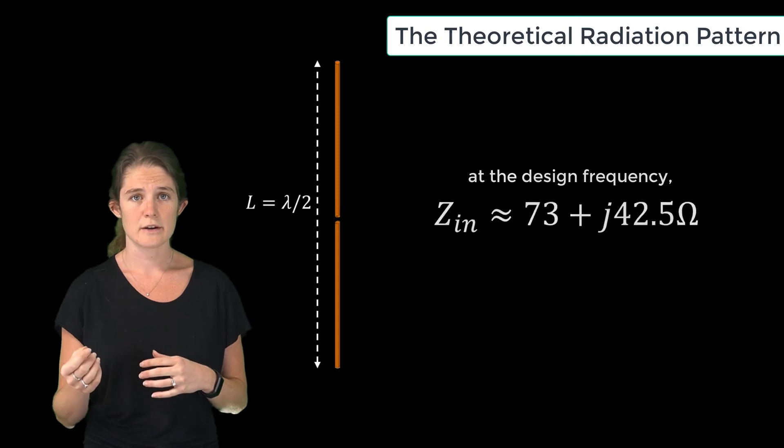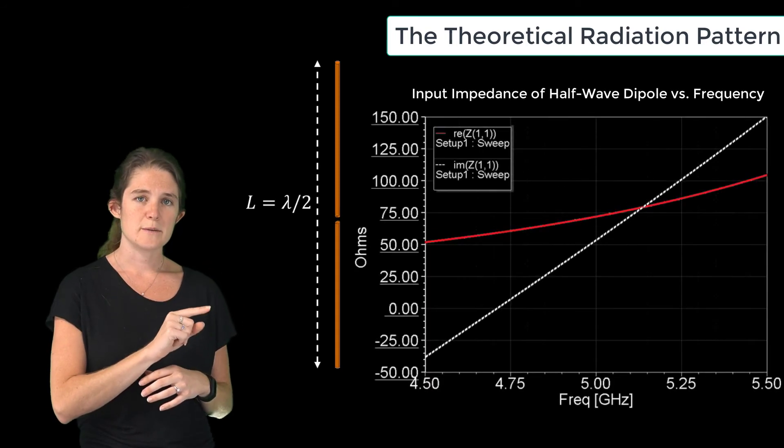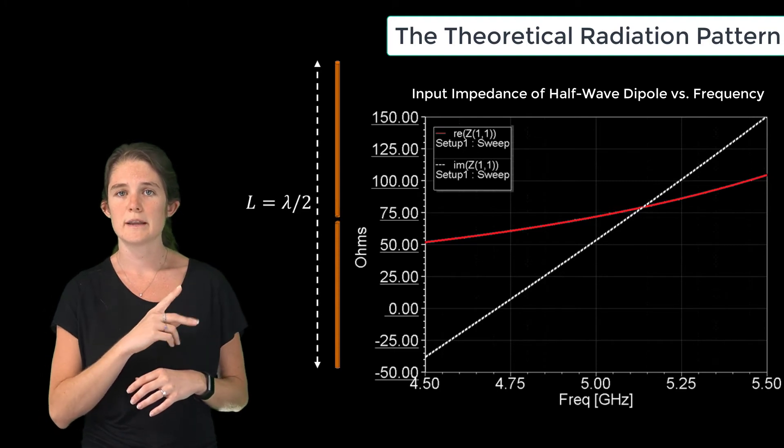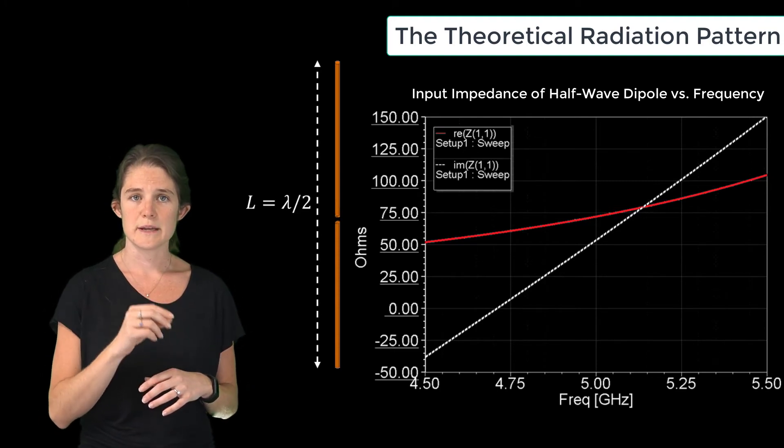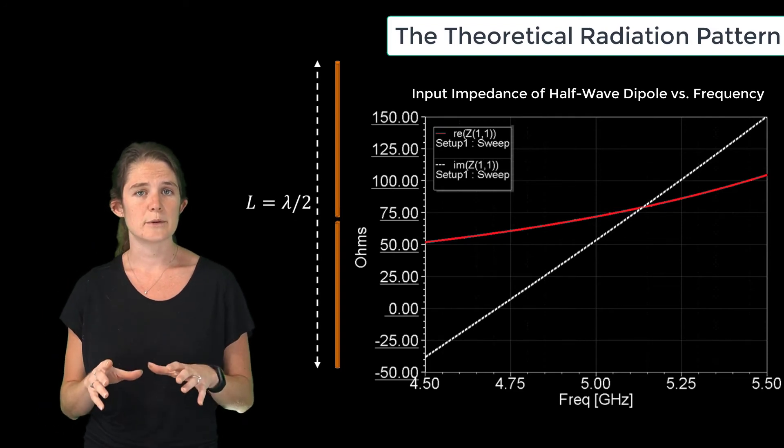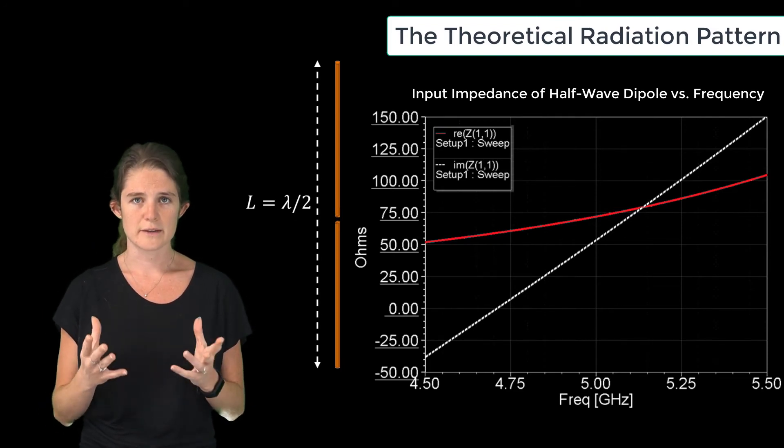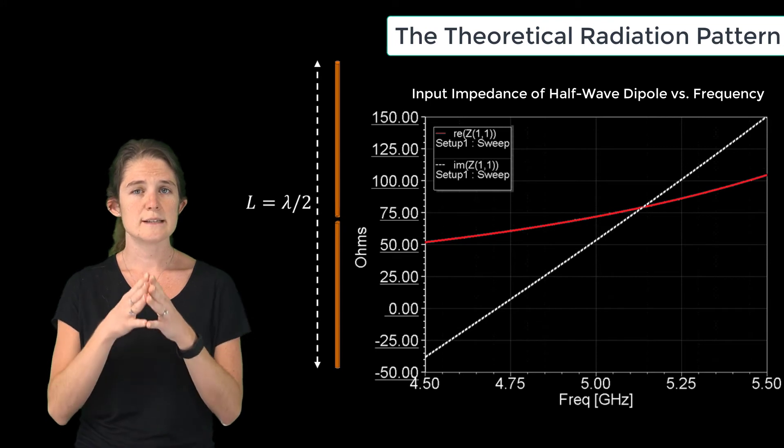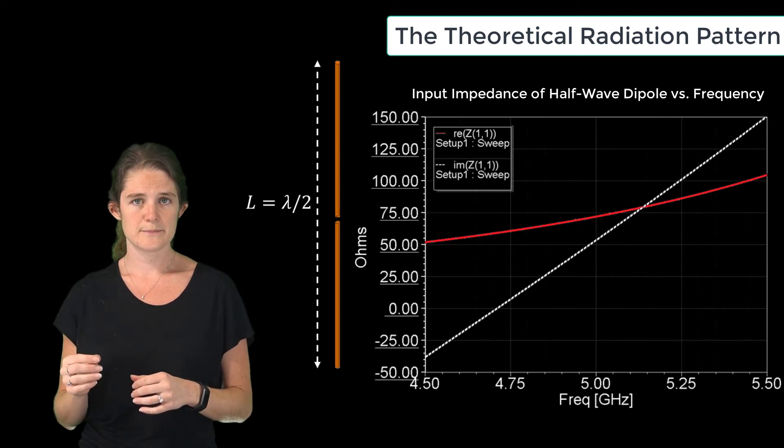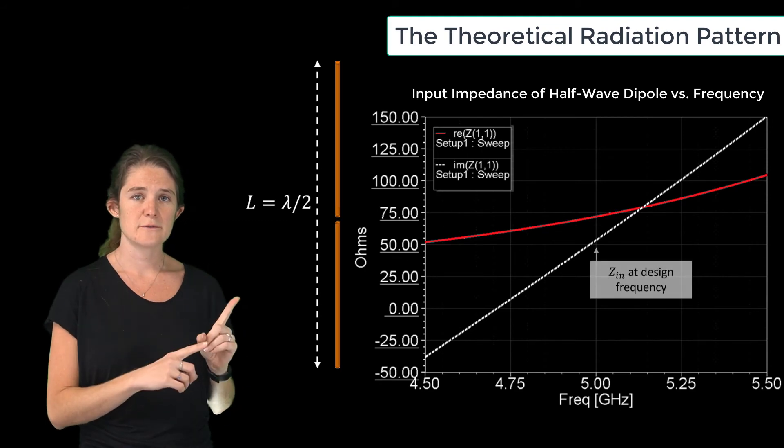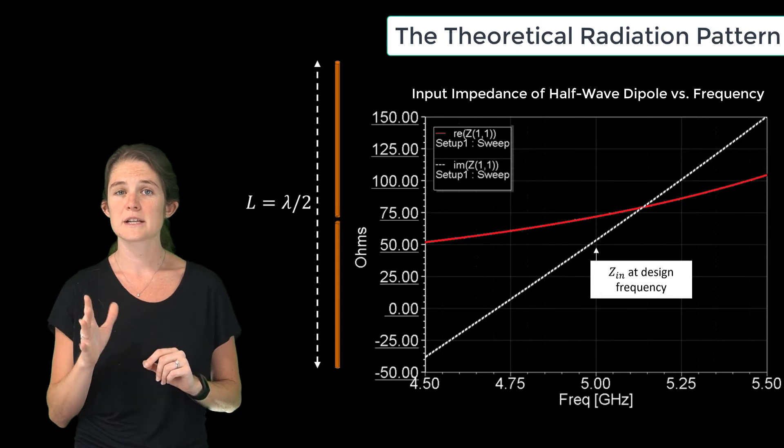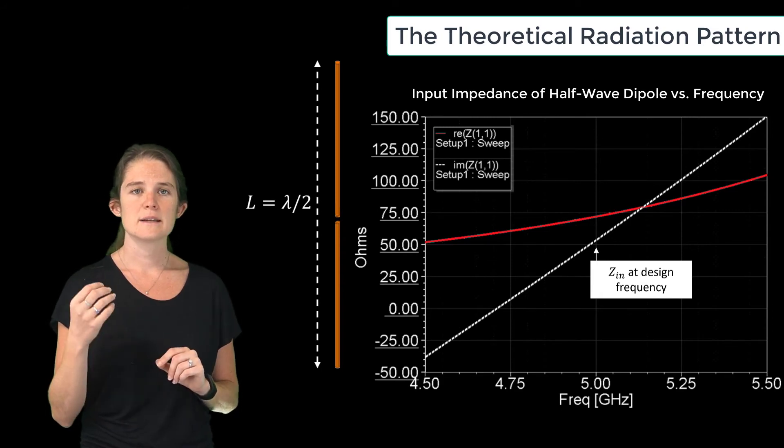Here's a graph of the input impedance to show what's going on. So here you have the real part and the imaginary part of the input impedance plotted on the same axes. For the purposes of this example I used a design frequency of 5 gigahertz, so this antenna is exactly half wavelength long at 5 gigahertz. So here's the design frequency of the antenna on the graph, and you can see that the input impedance here has a real part of approximately 73 ohms and an imaginary part of approximately 42.5 ohms, which is inductive.